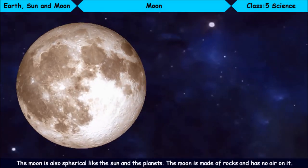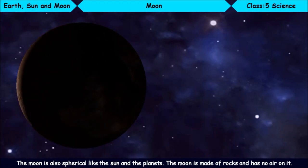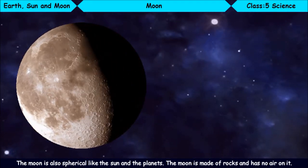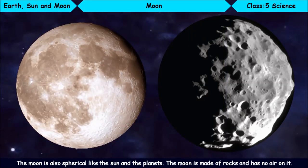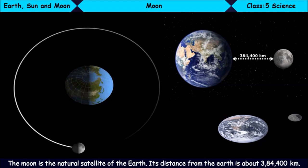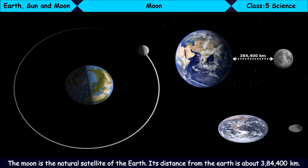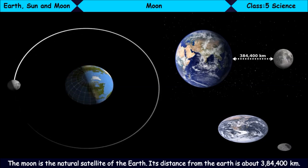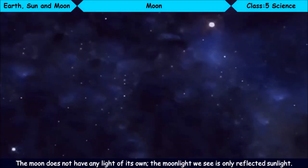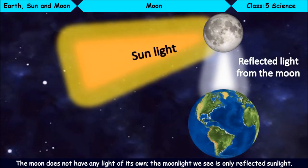Now let us learn about the Moon. The Moon is also spherical like the Sun and the planets. The Moon is made of rocks and has no air on it. The Moon is the natural satellite of the Earth. Its distance from the Earth is about 384,400 km. The Moon does not have any light of its own. The moonlight we see is only reflected sunlight.